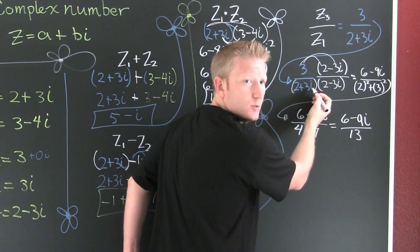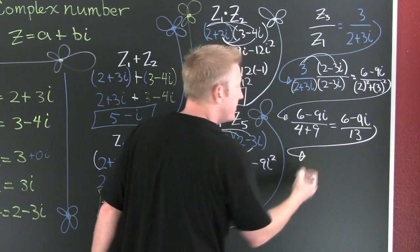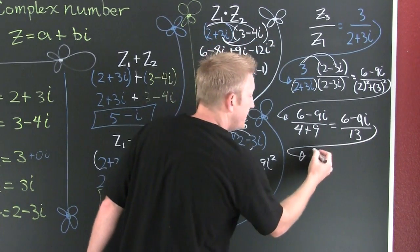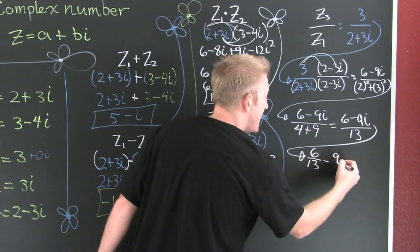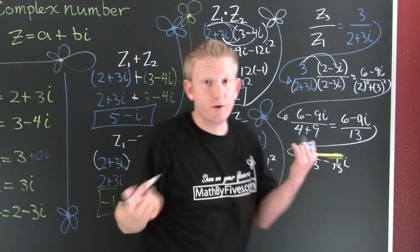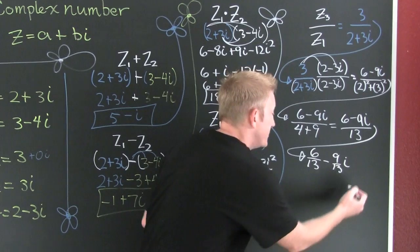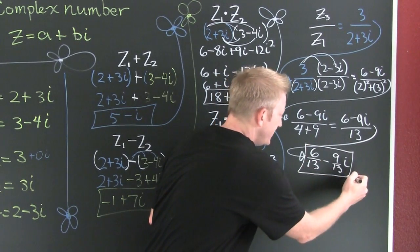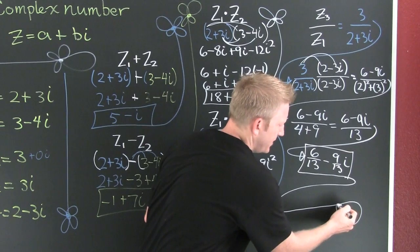So then this is 6 minus 9i divided by 13. You're wondering how I got that? Go ahead, FOIL that out. See if it works. Now I'm not done there because the complex numbers are written in a plus bi form. This is going to be 6/13 minus 9/13 i. I want to write it like that where I separate the reals and the imaginary parts.